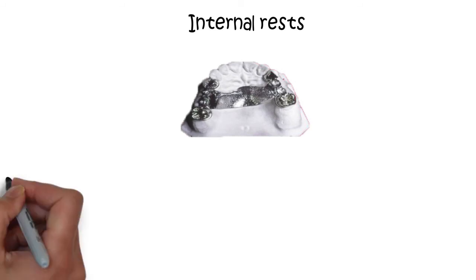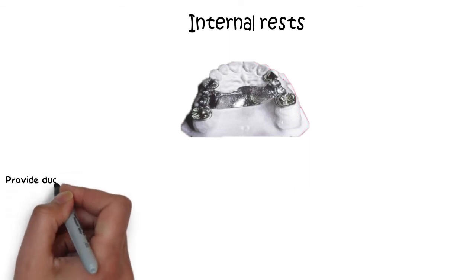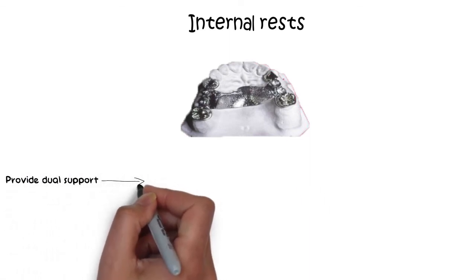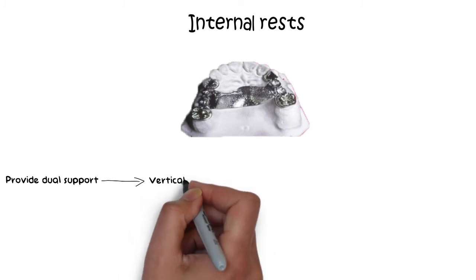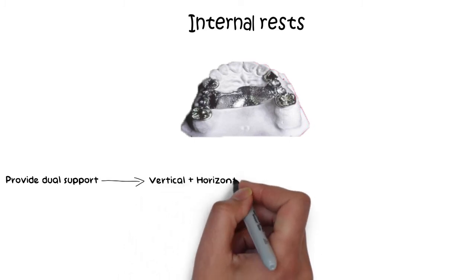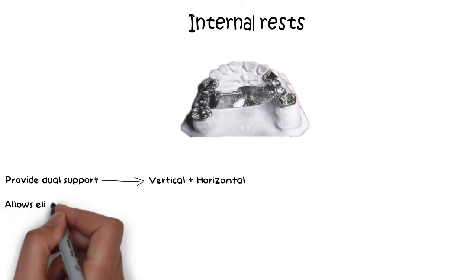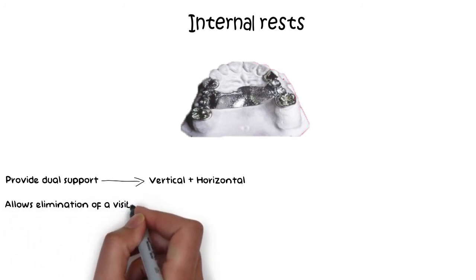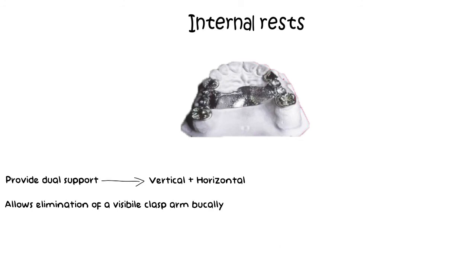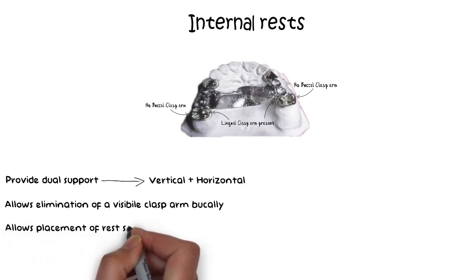These rests will provide occlusal support as well as horizontal stabilization to the denture. Therefore these internal rests provide dual support vertically as well as horizontally. The main advantage with this type of rest is to allow the elimination of visible clasp arm buccally because this type of rest is already providing the horizontal support, and it also allows the placement of rest seat in a more favorable position.